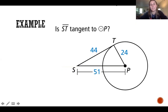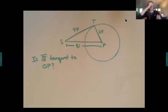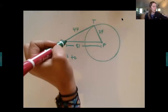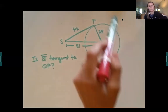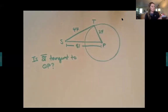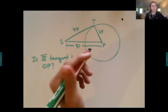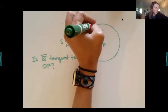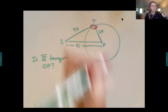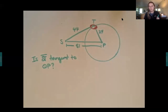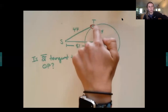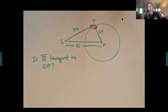Let's do examples. You can pause this and write this down. So we're looking to see if ST is tangent to circle P. What we need to know, in pink, is if this angle right here is a right angle — if it's perpendicular — because that's what our theorem tells us. It tells us that if it's tangent, then it's perpendicular from that ray, from the circle out to that external point.